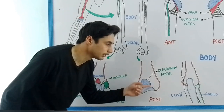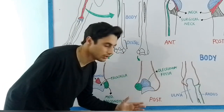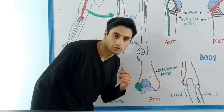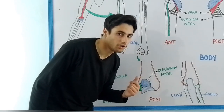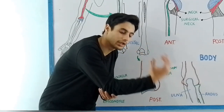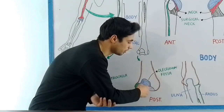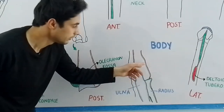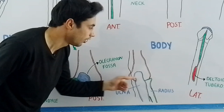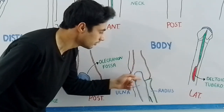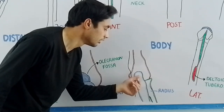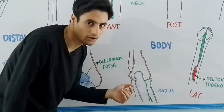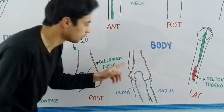On the posterior side of the distal extremity, there is another fossa in the center known as the olecranon fossa. This fossa contains the olecranon process of the ulna bone during extension of the elbow joint.